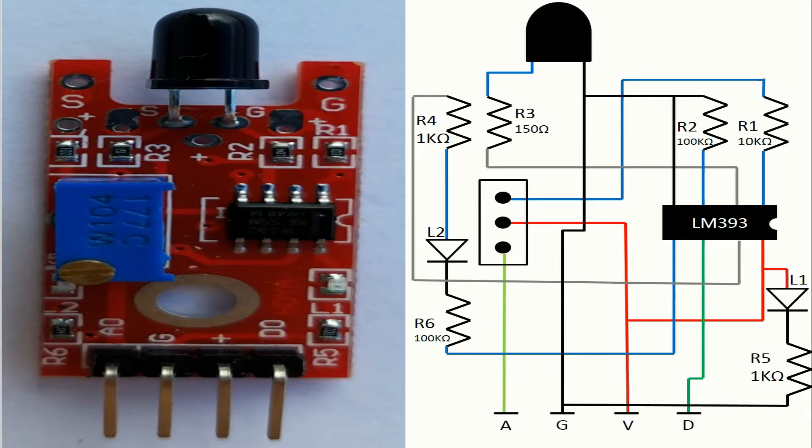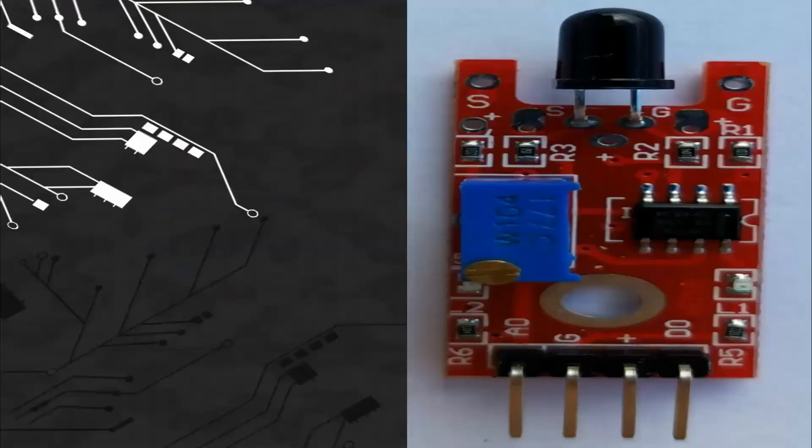Let's talk about the pins. The pins in this module are 4. We have the ground pin with G sign. We have the voltage pin with the plus sign. We have the analog pin with A0 sign. And of course we have the digital pin with D0 sign.